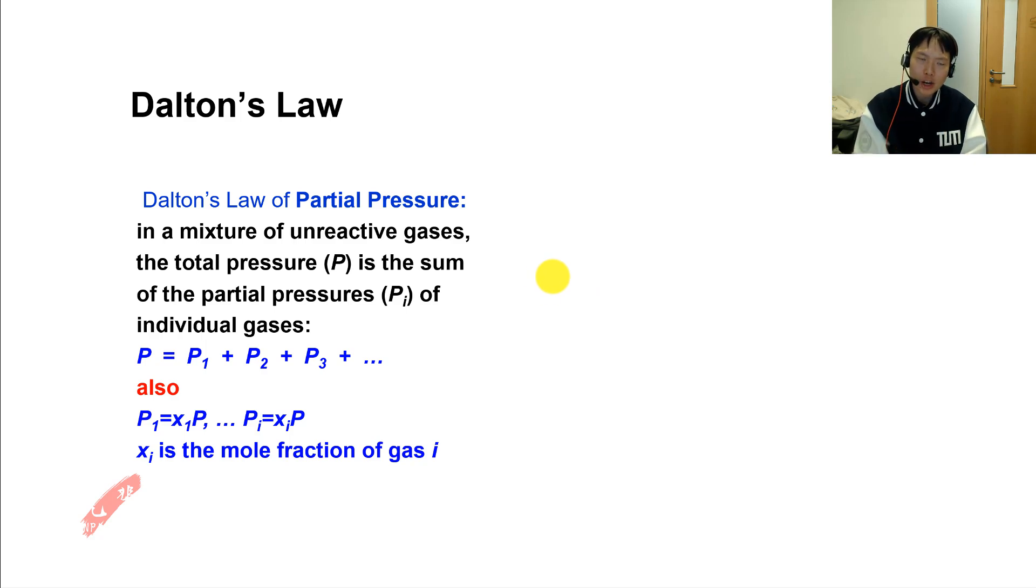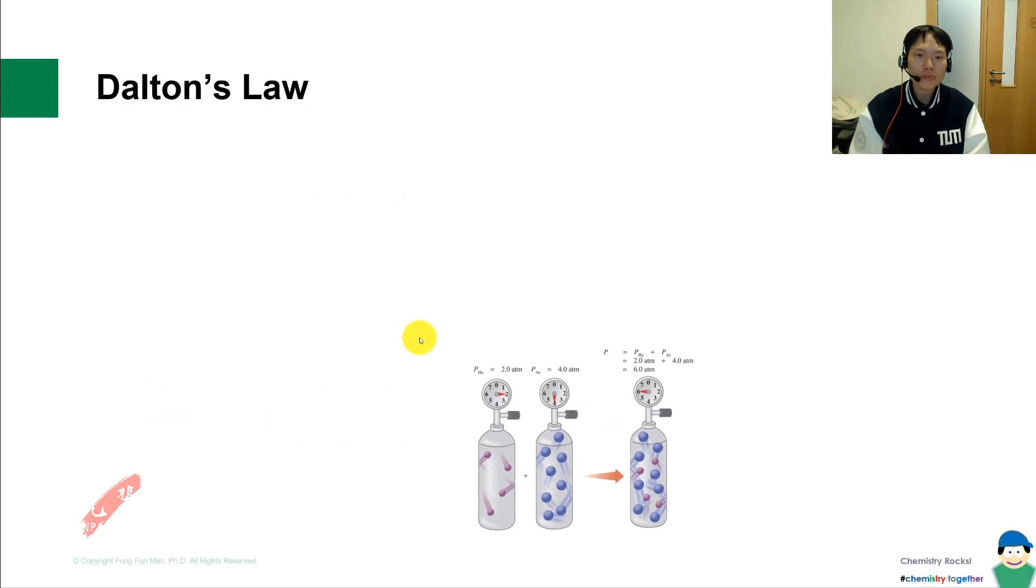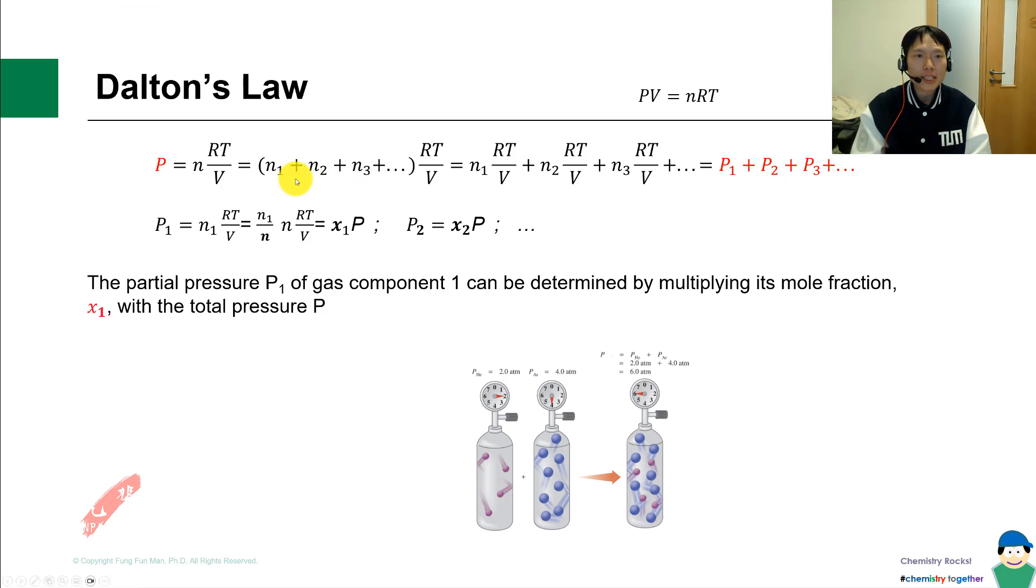Next, we have Dalton's law of partial pressures. It essentially says that when you have a system with gas A, gas B, gas C, each of them contributes pressure to form the total pressure. The number of moles of each gas contributes to the total number of moles. To prove this, let's assume we have three kinds of gases: n1, n2, n3. We have this n total. We break it down by taking out RT over V through factorization, then multiply and expand it out. We notice that this is the pressure of gas one, pressure of gas two, pressure of gas three. So it validates Dalton's law that the total pressure is the sum of the individual partial pressures of the gases.